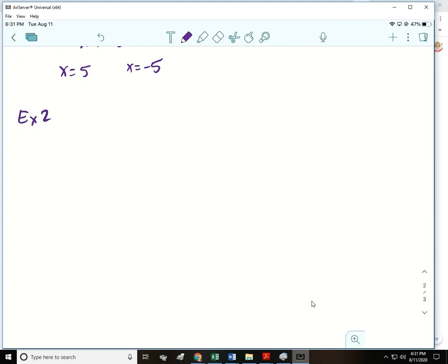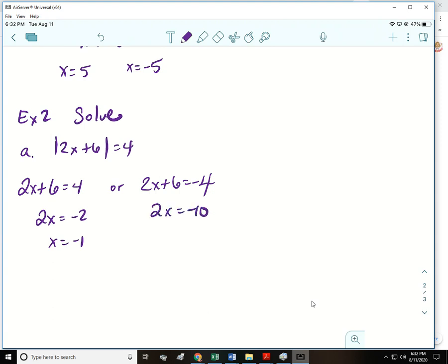On example 2 we're going to solve. Our equation is the absolute value of 2x plus 6 is equal to 4. So that 2x plus 6 could be 4, or that 2x plus 6 could be negative 4, because that would give you when you take the absolute value of it give you 4. So this is just two equations to solve by subtracting and then dividing.